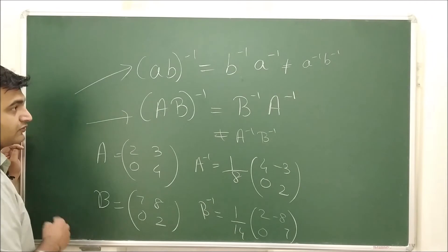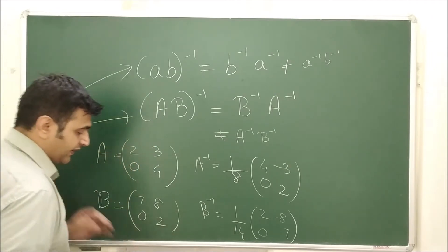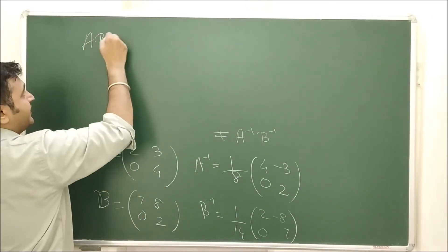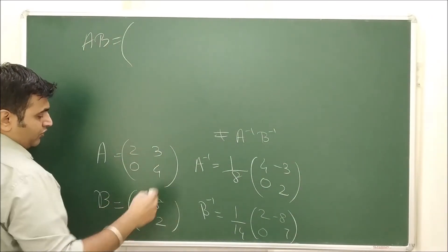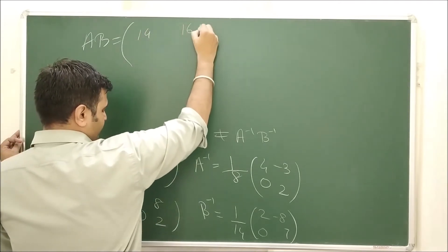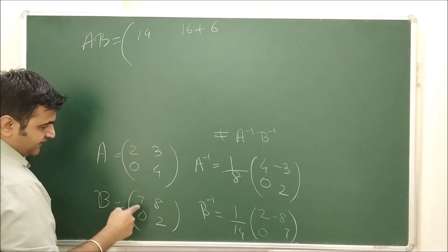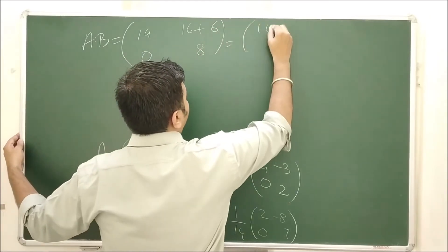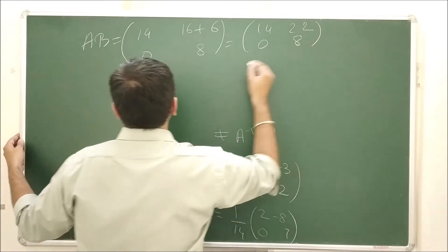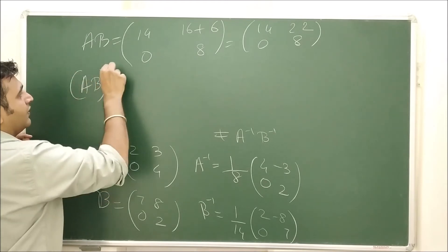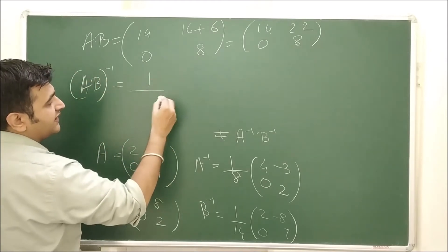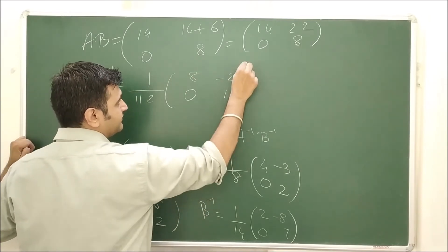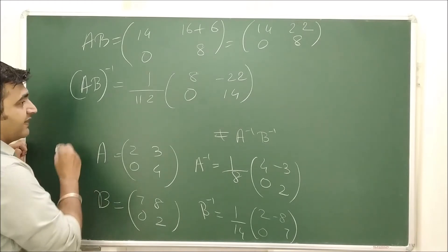Now I need to find the product AB and then find its inverse. AB = [2×7, 2×8 + 3×2; 0, 4×2] = [14, 22; 0, 8]. So (AB)⁻¹ is 1 over the determinant — 14×8 = 112 — interchange the diagonal entries and give the minus sign.